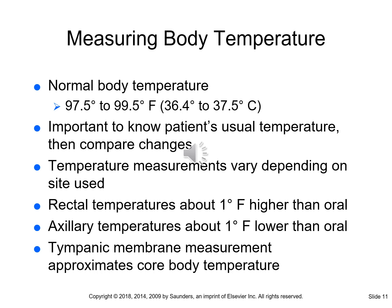A normal body temperature is 97.5 to 99.5 degrees Fahrenheit, or 36.4 to 37.5 degrees Celsius. Make sure you understand how to convert between Celsius and Fahrenheit. To determine Celsius, take the Fahrenheit number minus 32 and divide by 1.8. To determine Fahrenheit, multiply 1.8 times the Celsius number and add 32.